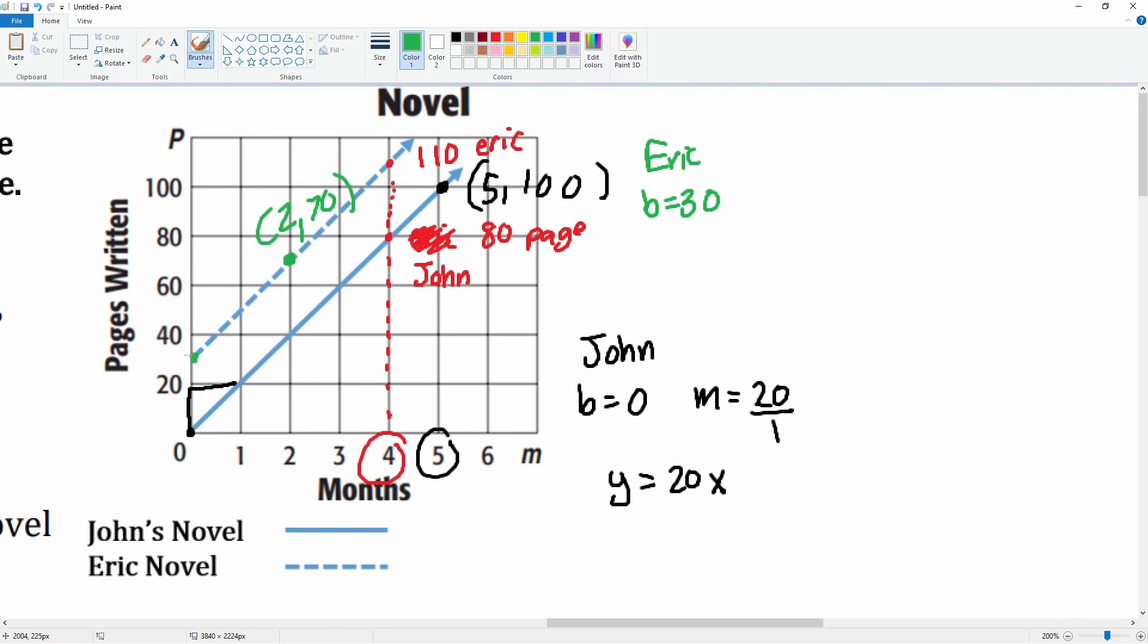So for the first month, he went up 20 over 1, so the slope here, m, is also 20 over 1. Oh, this makes sense because you see how these two are parallel. They must have the same slope. So for Eric, it's y equals 20x plus 30.